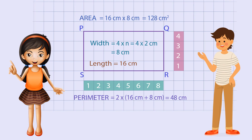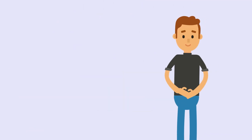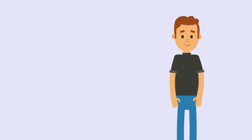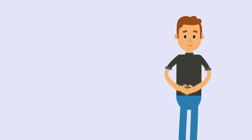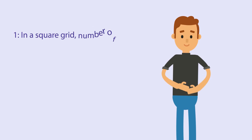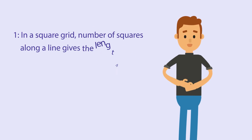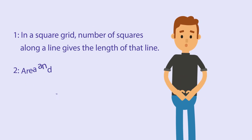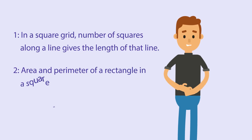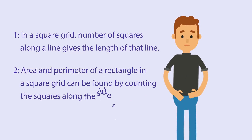Very nice, you did great. That's how we can find the area and perimeter of a rectangle in a square grid. In summary, now we know that in a square grid, the number of squares along a line gives the length of that line. The area and perimeter of a rectangle in a square grid can be found by counting the squares along the sides.